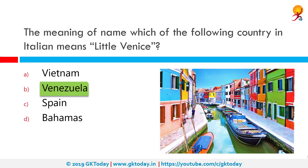According to the most popular and accepted version, in 1499 an expedition led by Alonso de Ojeda visited the Venezuelan coast. The stilt houses in the area of Lake Maracaibo reminded the Italian navigator Amerigo Vespucci of the city of Venice, so he named the region Venezuela, or little Venice.